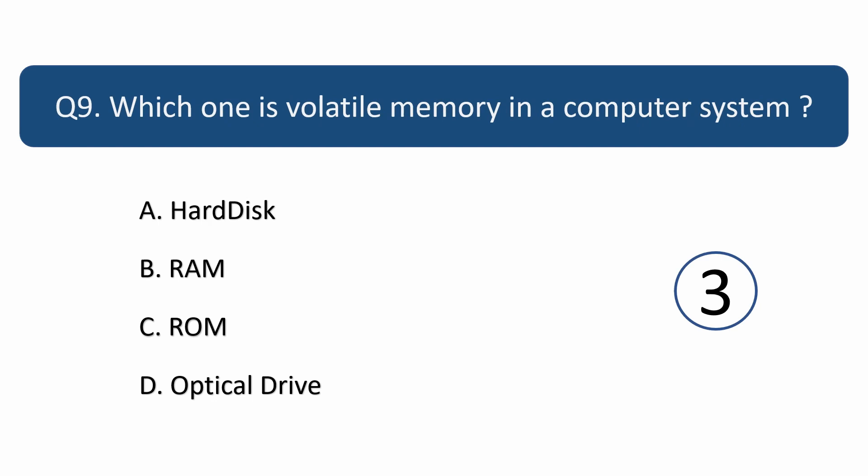Question number 9. Which one is volatile memory in a computer system? Answer is B. RAM.